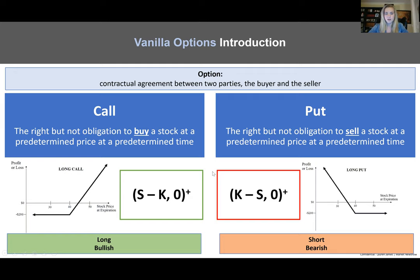The value of a call payoff at maturity is going to be the difference between the stock price at maturity and the strike price. If the stock price is greater than the strike price, we see that upward sloping line. However, if it is less than, we see it capped at a floor of zero. This creates a nonlinear payoff structure, which is the beauty of options. This nonlinearity is absolutely key.